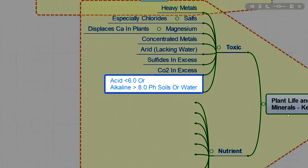So acid. Less than 6.0 or alkaline. Greater than 8.0 pH. These are soils or water that have that kind of acid concentration. Either one of those will be a problem for most plants. In the desert, you typically see more alkaline soils.